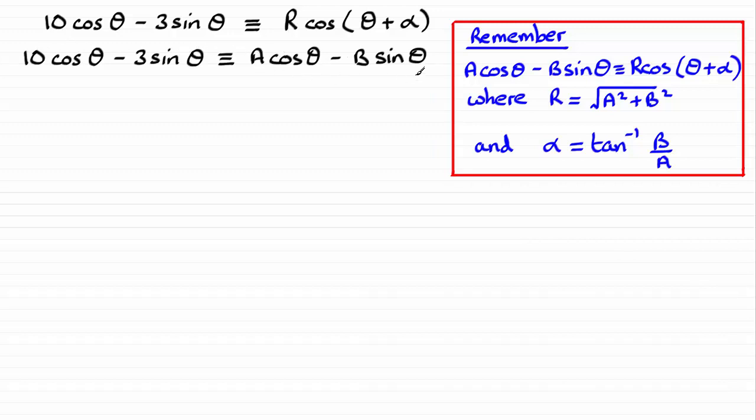It has this particular form A cos θ minus B sin θ and you should be able to see that we've got A equaling the 10 here. The B, be careful here, B is 3, not negative 3. So B is 3.